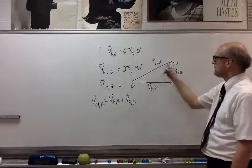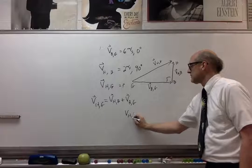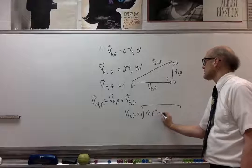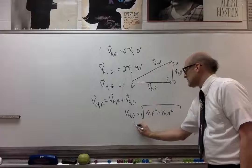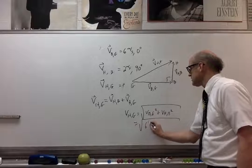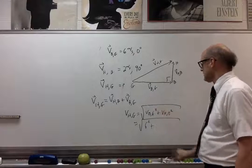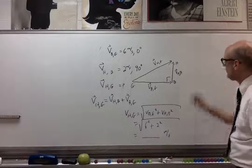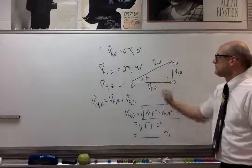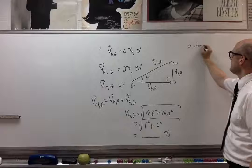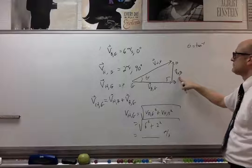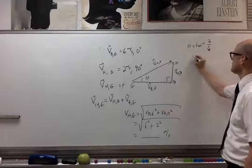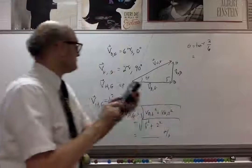To find V_HG we use the Pythagorean theorem: V_HG equals the square root of V_BG squared plus V_HB squared, so the square root of 6 squared plus 2 squared. That gives us the speed. Then the angle theta is the arctan of V_HB over V_BG, which is 2 divided by 6.